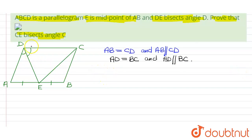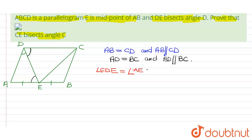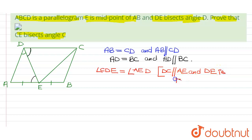So therefore we can say that angle CDE is equal to angle AED. The reason being DC is parallel to AE and DE is the transversal, making these alternate interior angles.